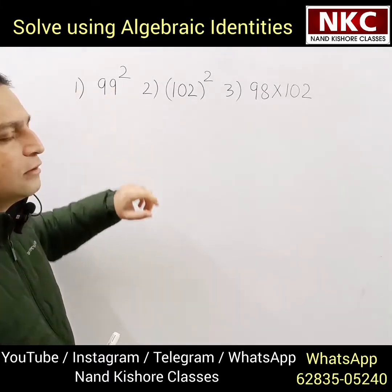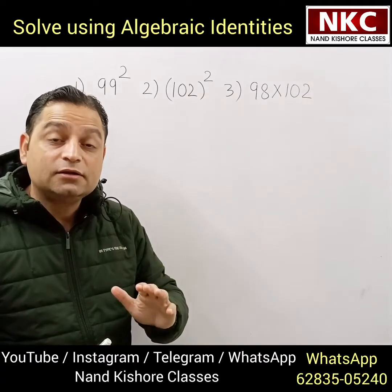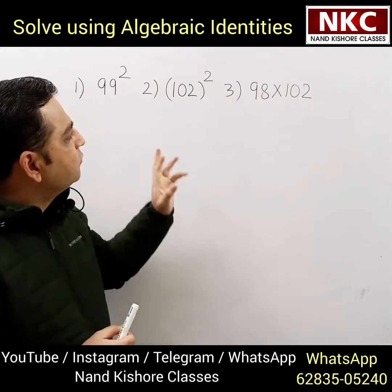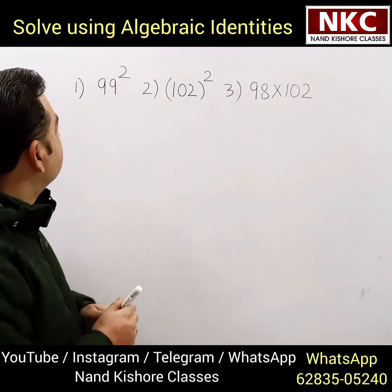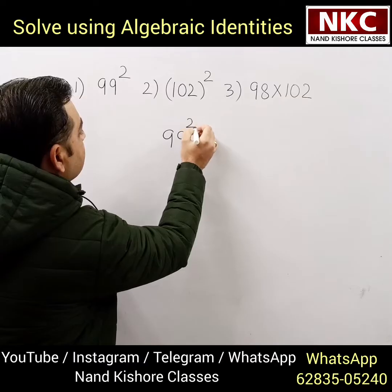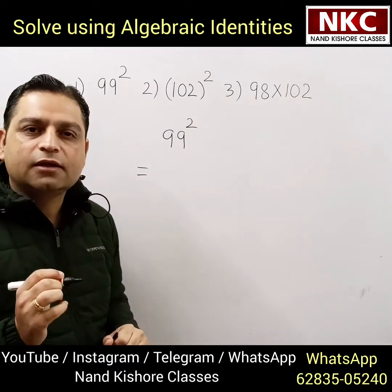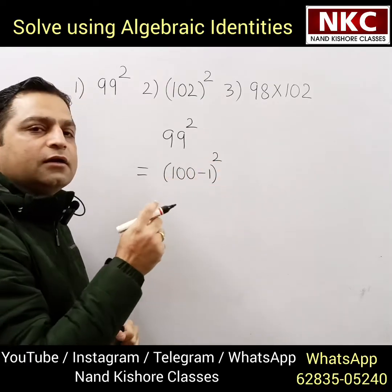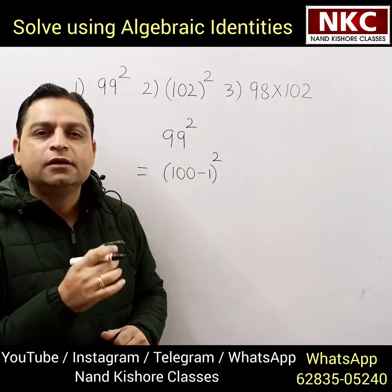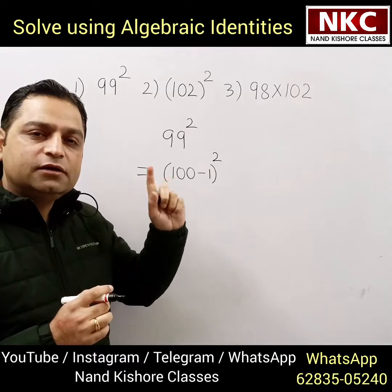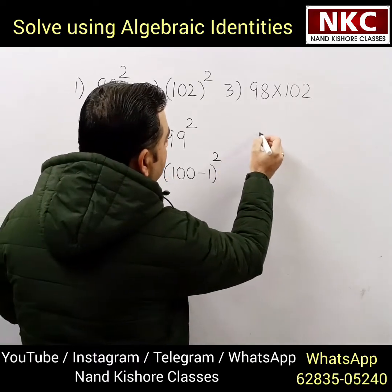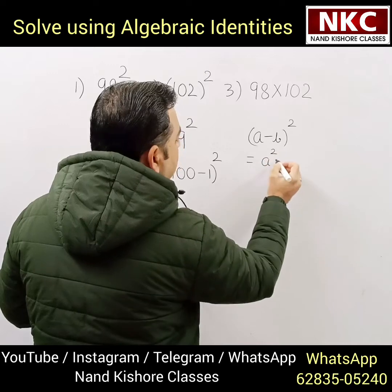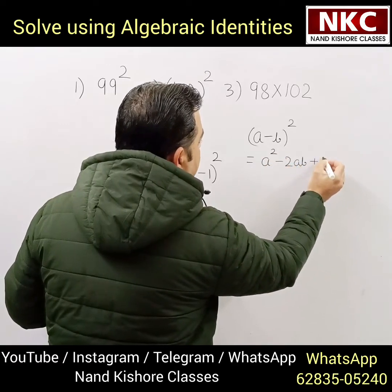First of all, 99 square — how can we find it using an algebraic identity? We need to understand very carefully which identity will be used. There are three identities which we will use for these three questions. 99 square can be written as 100 minus 1, because 100 minus 1 is 99. Then we need to identify which identity to use: a minus b, whole square, is equal to a square minus 2ab plus b square.